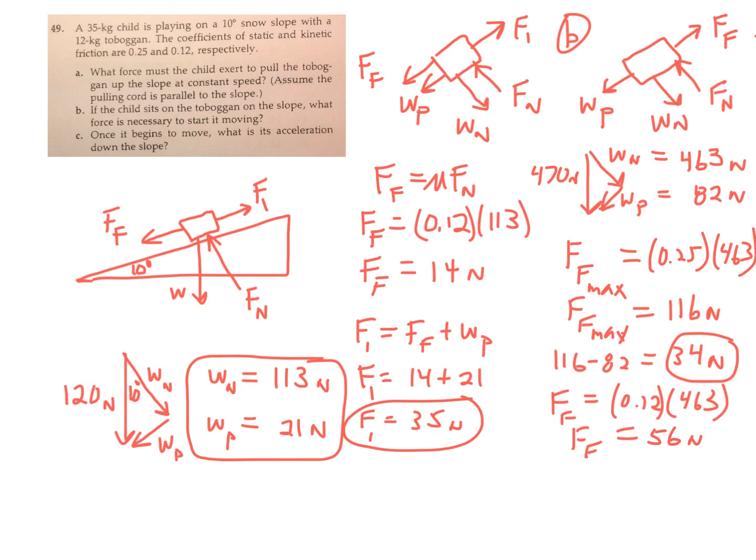All right, so now we're going to apply F net equals ma. So down the ramp, the parallel component of the weight, the 82 newtons, is bigger than the force of friction, the kinetic friction at this point. So the F net is the big force, 82, minus the 56, equals the mass, which is 47, times the acceleration of this toboggan child system, sliding down the hill, speeding up as it goes down the hill. So we'll solve that for A.